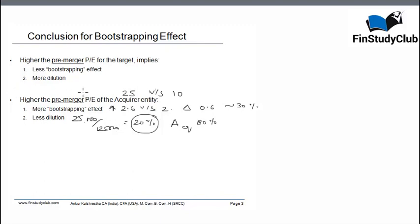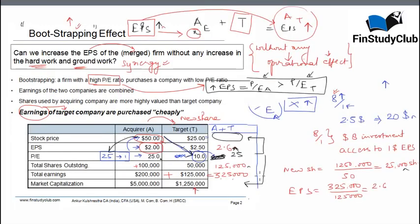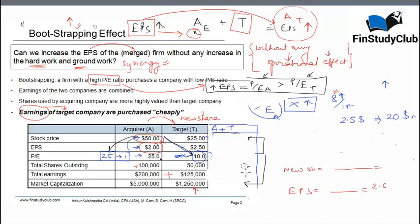Let's understand this scenario and compare it with a condition where the PE of the target is very high, and what will happen to the bootstrapping impact and the dilution. Let me just clean the board a bit.